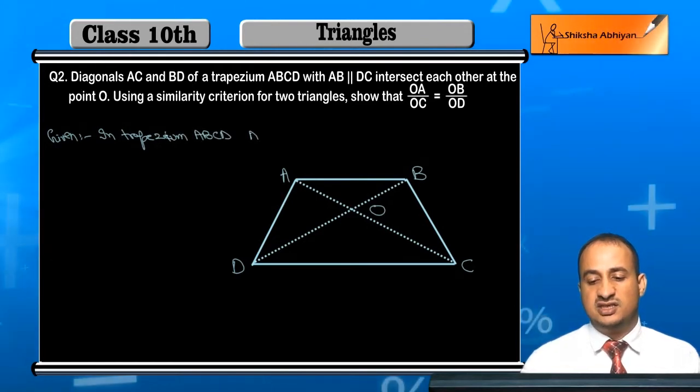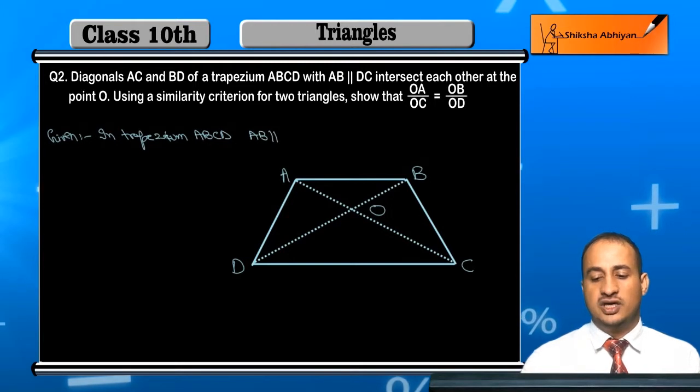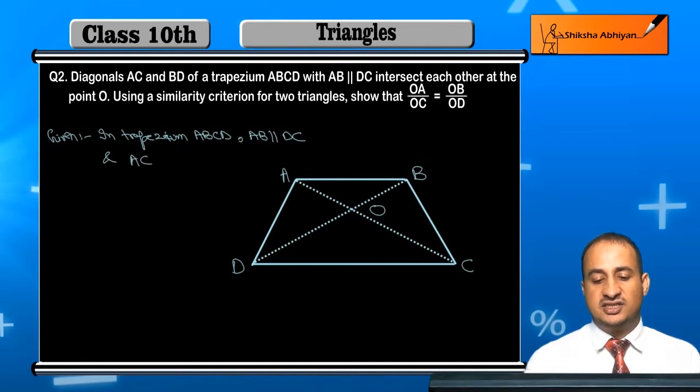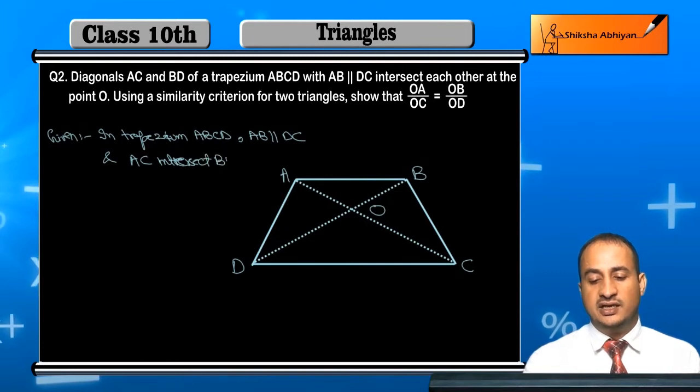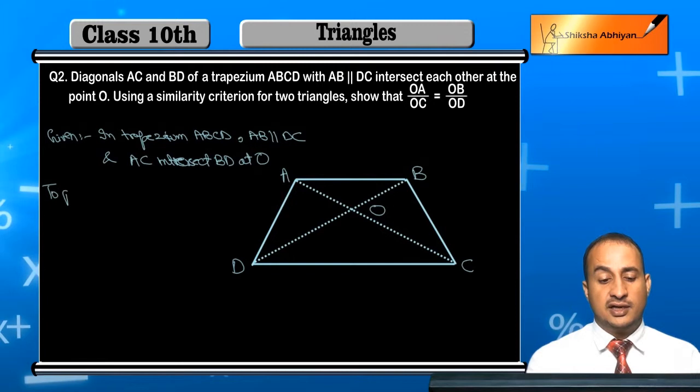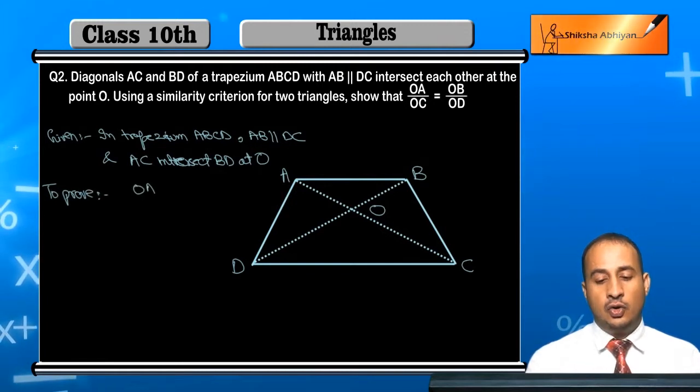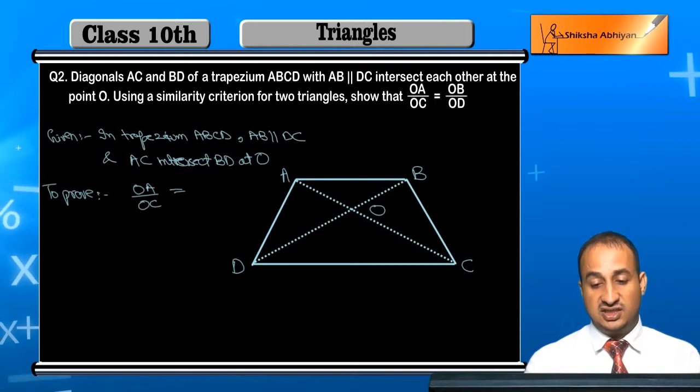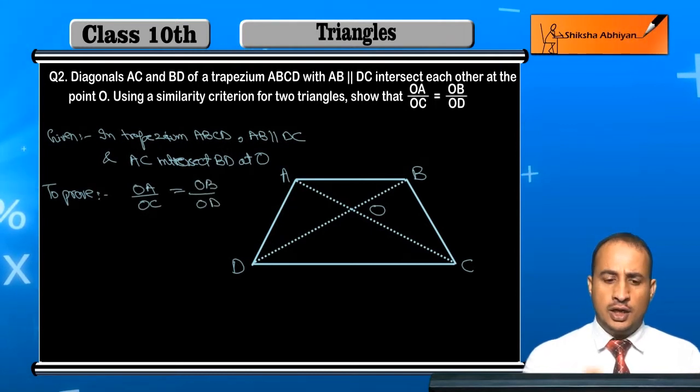ABCD, AB is parallel to DC. To prove: OA/OC = OB/OD.